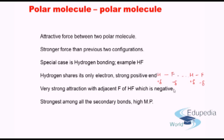Among the three kinds of secondary bonding, polar molecule to polar molecule is the strongest. Thereby, molecules that manifest polar molecule to polar molecule secondary bonding have the highest melting point. Even within this category, molecules that exhibit hydrogen bonding represent the strongest kind of secondary bond.